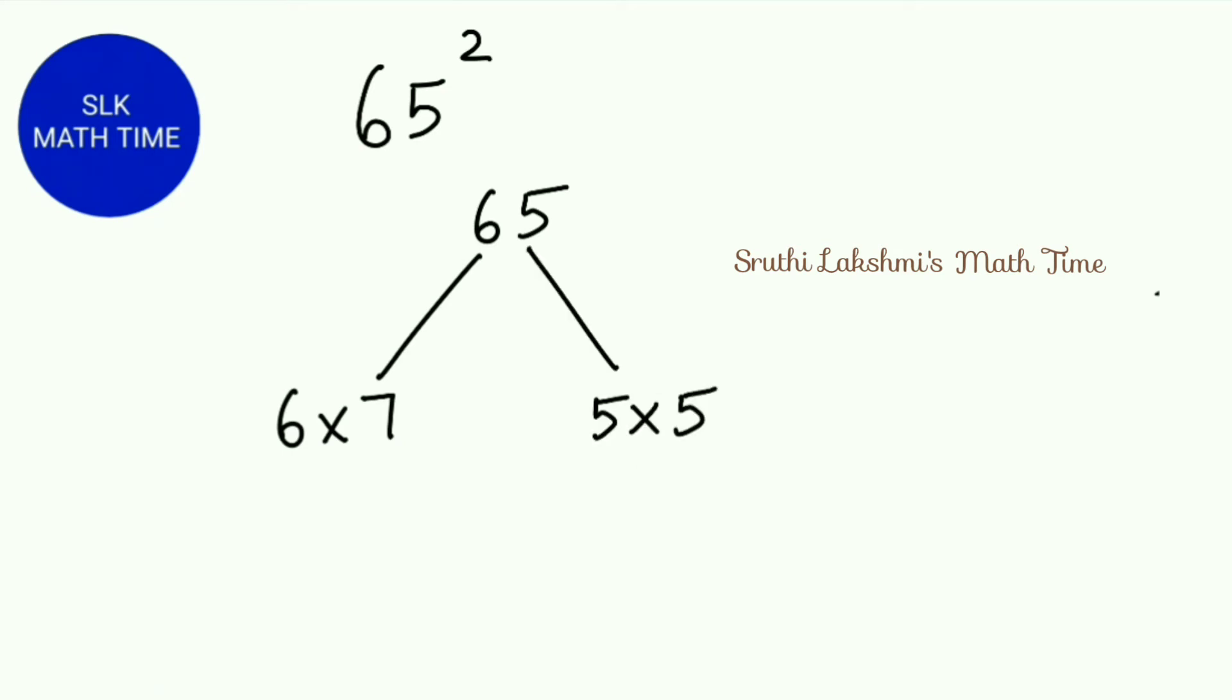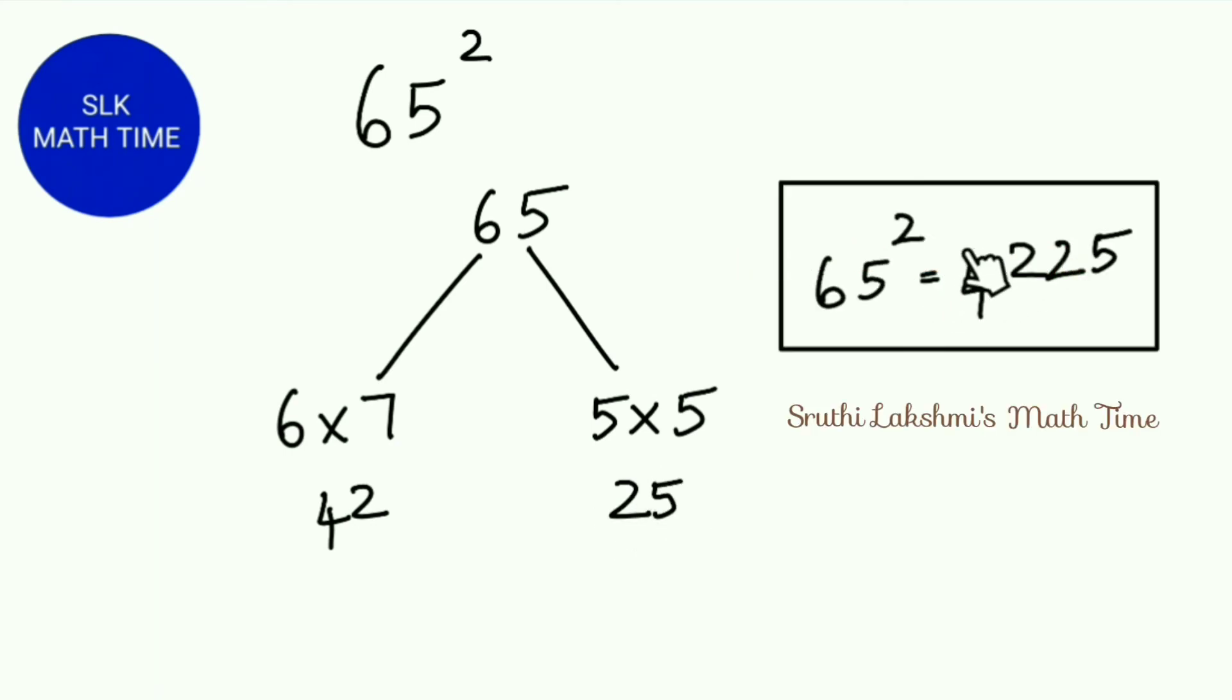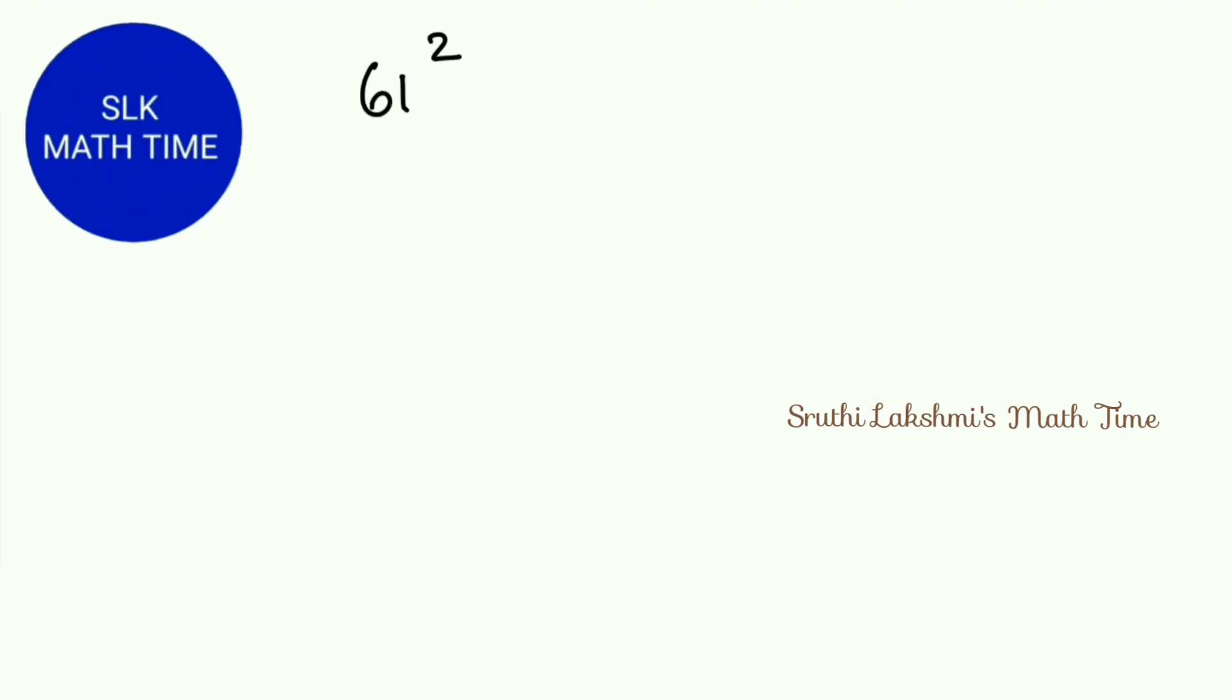So 5 square is basically 5 into 5. So 6 times 7 is 42. And 5 into 5 is 25. So 65 square is 4225. See how easy this method is. Let's see another method.